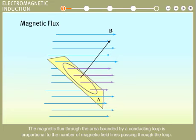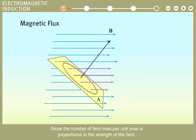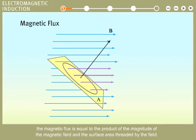The magnetic flux through the area bounded by a conducting loop is proportional to the number of magnetic field lines passing through the loop. Since the number of field lines per unit area is proportional to the strength of the field, the magnetic flux is equal to the product of the magnitude of the magnetic field and the surface area threaded by the field.